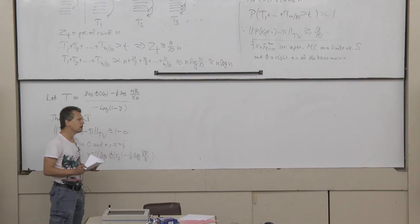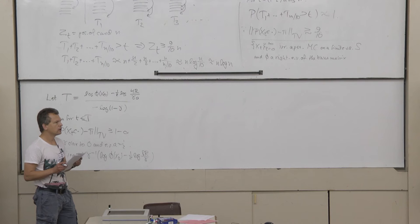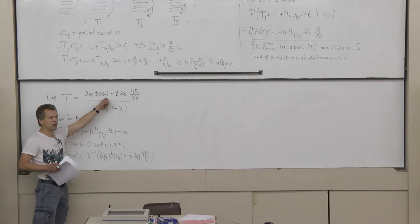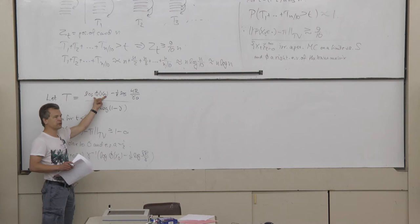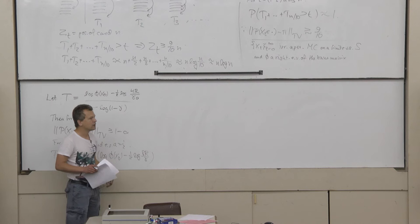A question was raised: since you could multiply the eigenfunction by any constant, how is X_0 normalized? The answer is that there is a normalization in the expression: if you scale phi to be larger, then R will be larger by the same factor, so the bound is invariant.